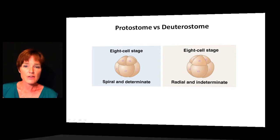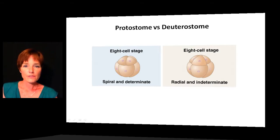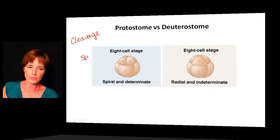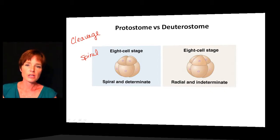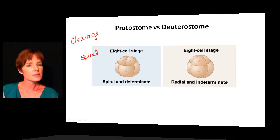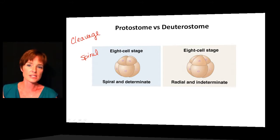We can divide organisms into two groups based on their development: protostomes and deuterostomes. One of the main differences is in the process of cleavage. For protostomes, shown in the blue picture here, cleavage is spiral — the plane of cell division is diagonal. The end result is cells of different sizes at the eight-cell stage, with smaller cells on top and larger cells on the bottom.